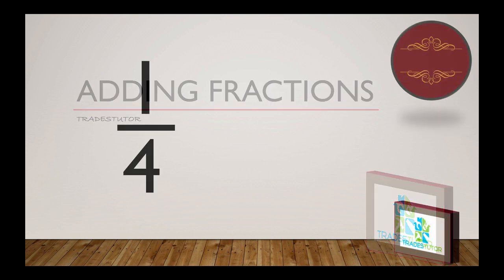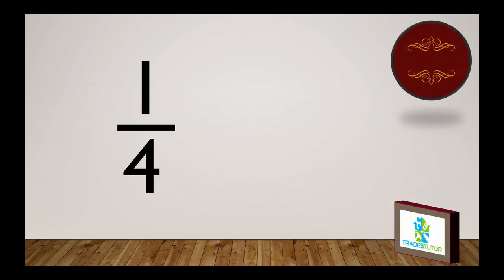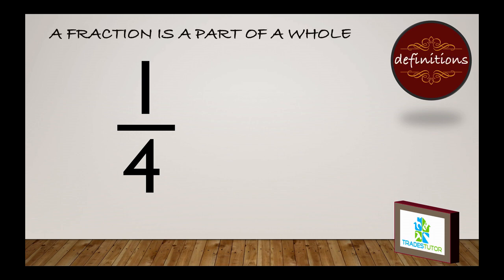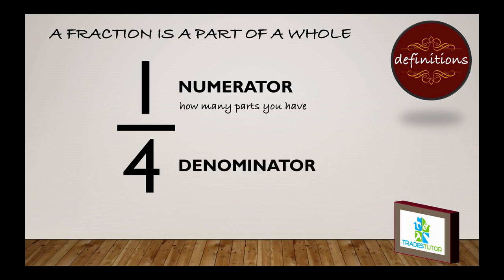So, we'll start with 1 over 4, or a fraction. We'll go through a couple of definitions here. A fraction is a part of a whole. So the 1 is what we call the numerator. That's how many parts you have. And then the 4 is called the denominator. That's how many parts make up a whole. So there's a fraction for you. That's an example.